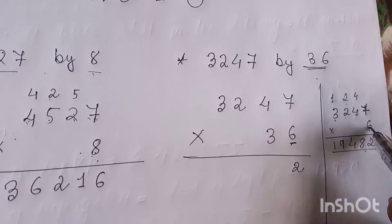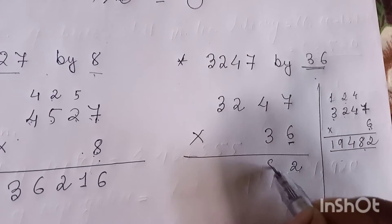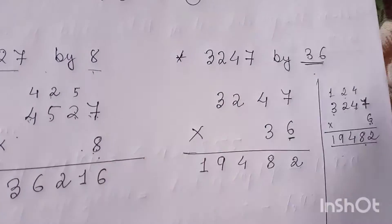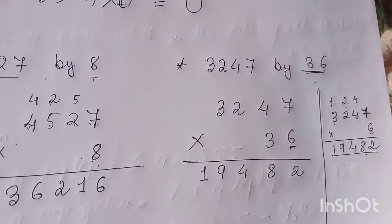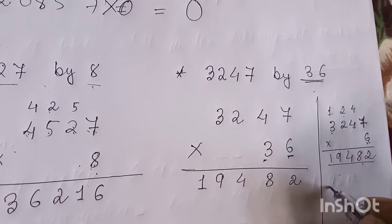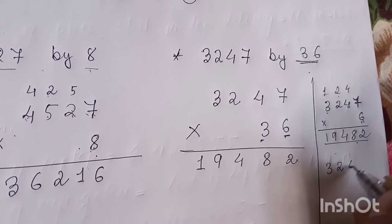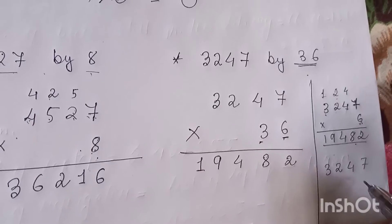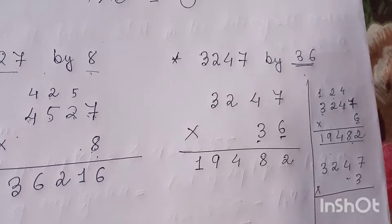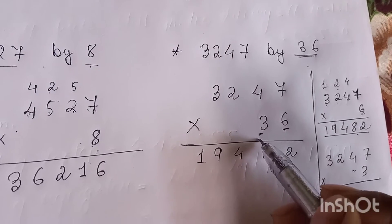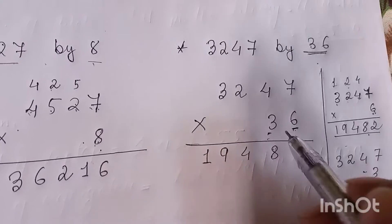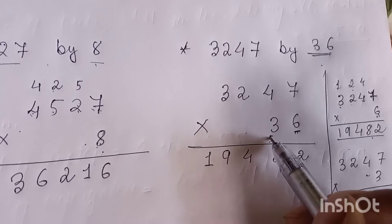The product of the first multiplication is 19,482. Now we have to multiply by the second digit, which is three. We multiply three thousand two hundred forty-seven by three.